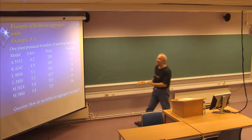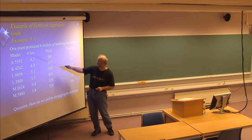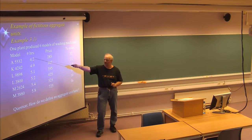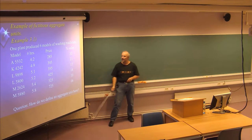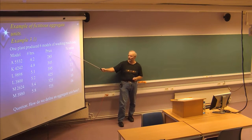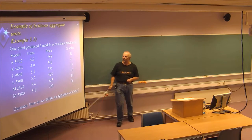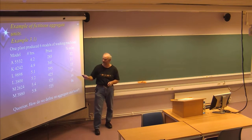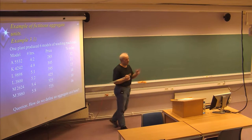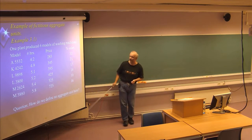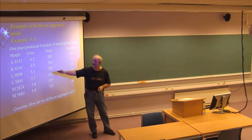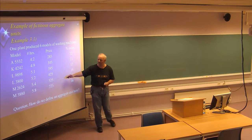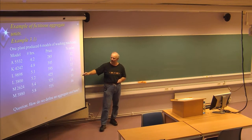This is one example of aggregate units where we are talking about different models of washing machines. We have model A5532, which uses 4.2 hours of production, has a price of 285, and represents 32% of sales. Another model is more advanced, takes more time to produce, has a higher price, but has a lower percentage of sales, and so on. In this example, you have six different models, which are more advanced according to working hours to produce and have a higher price.